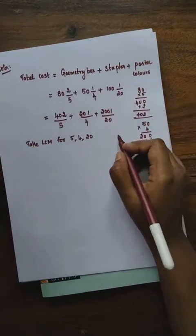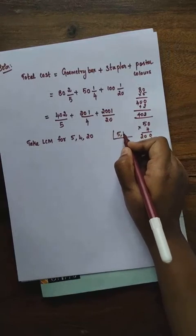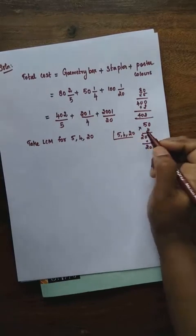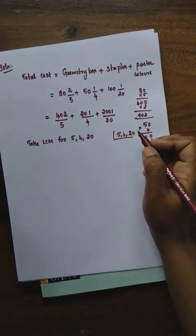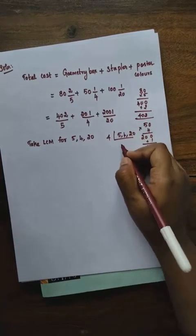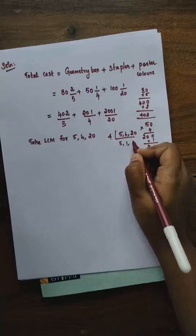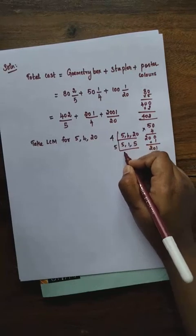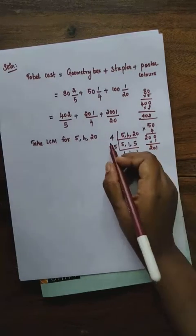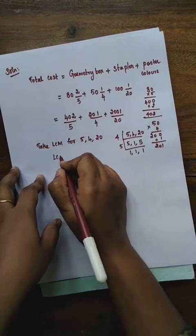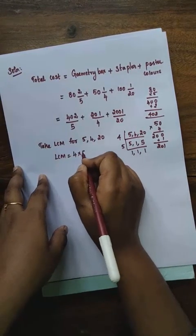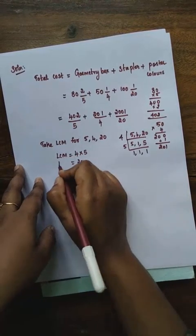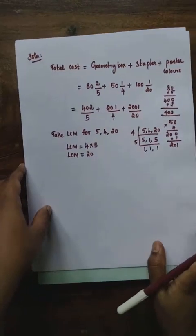Finding LCM for 5, 4, and 20: using the 4 table — 5×4 is 20, and then the 5 table — 1×5 is 5, 1×5 is 5. So our LCM is 4 into 5, which equals 20. Our LCM is 20.